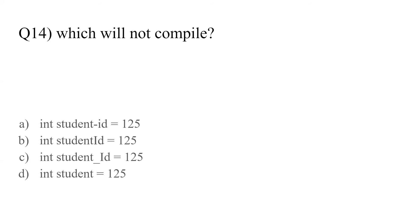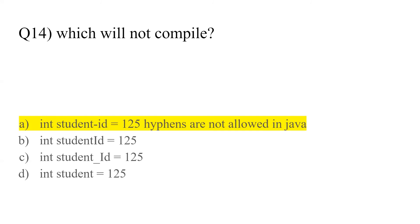Question number fourteen: which will not compile? We are given four options where only the variable name changes — student-ID with a hyphen, studentID in camel case, student_ID with underscore, and student. Among all four, option A will not compile because hyphens are not allowed when naming variables.